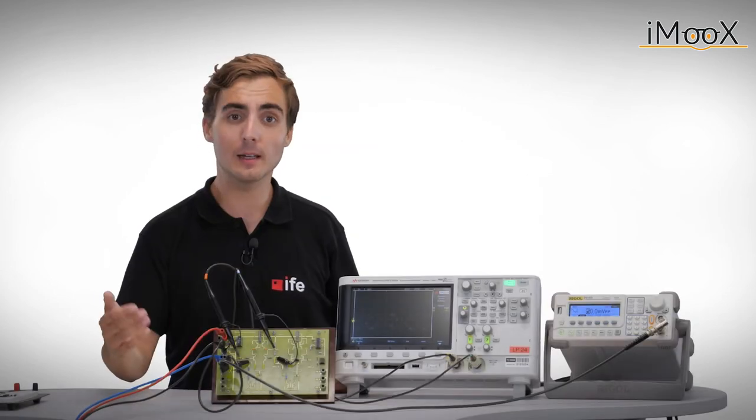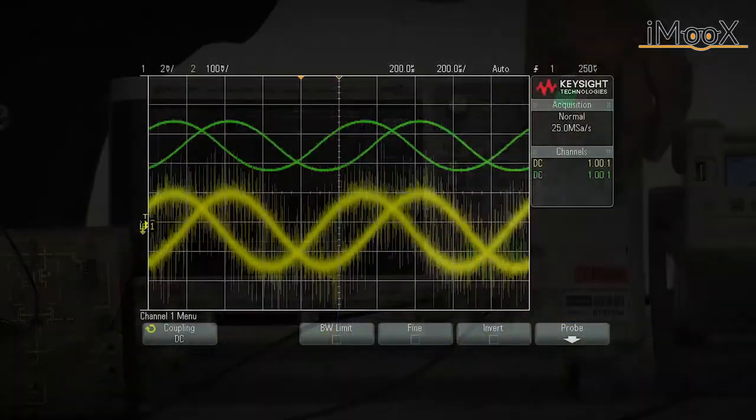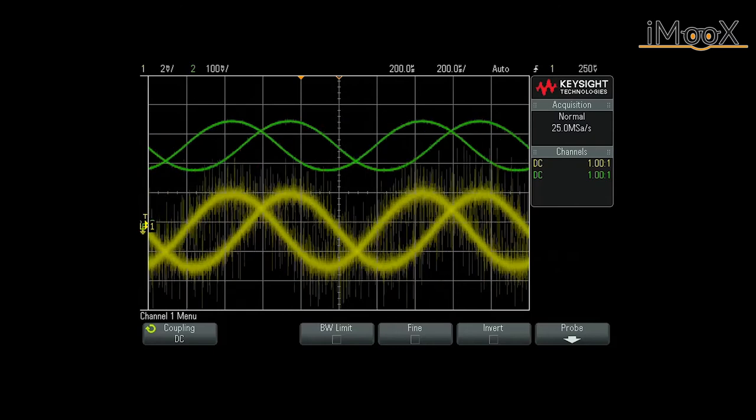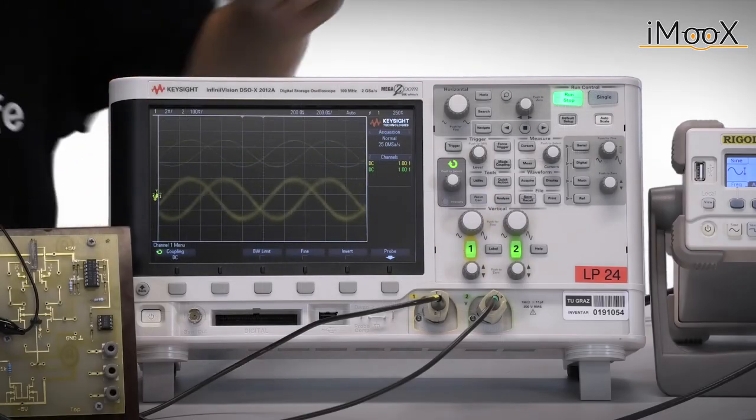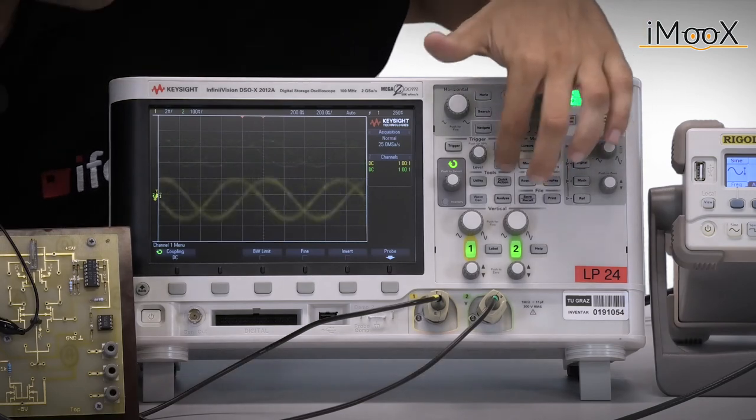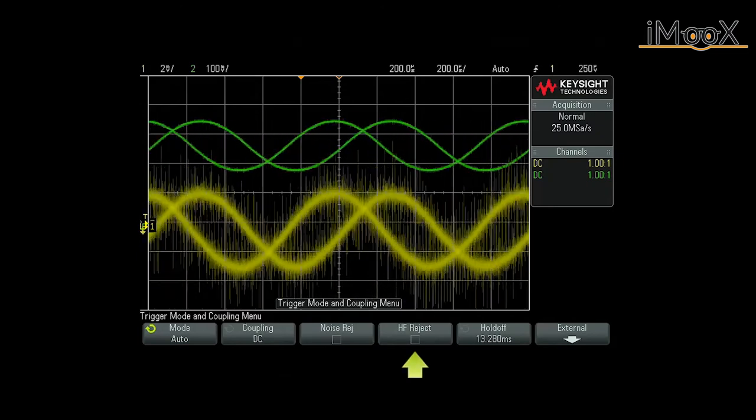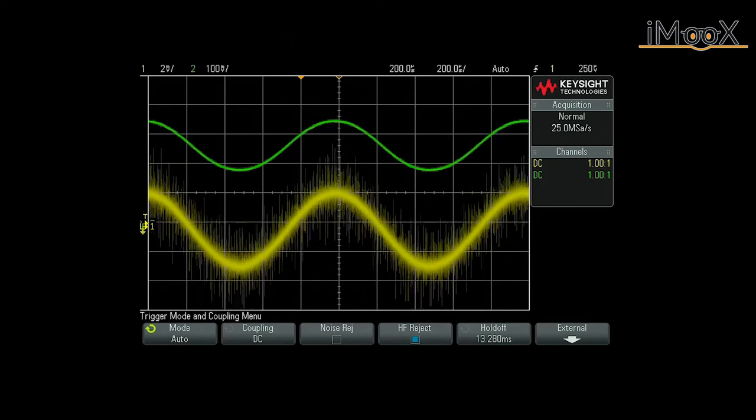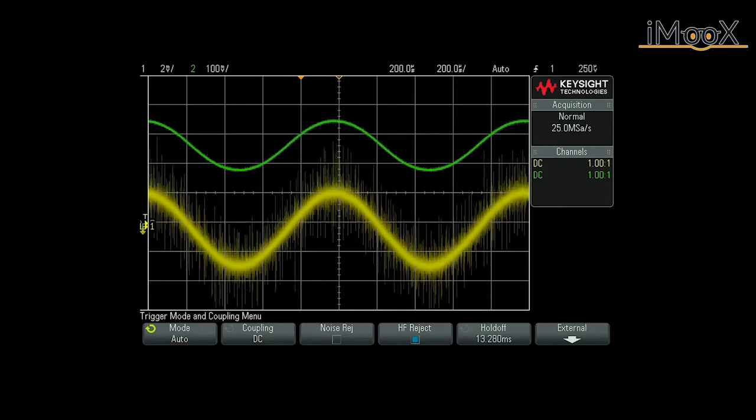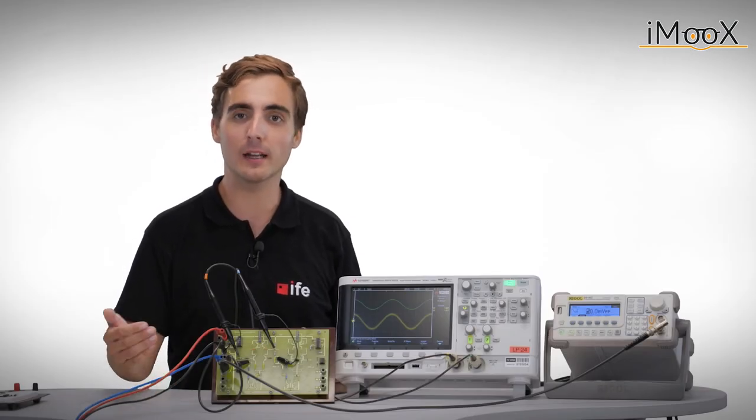We can see some problems with our measurement. The input signal is very noisy and some noise peaks are triggering the signal recording. In order to reduce this effect, we can go to mode coupling and we could select HF reject. In this way, a low-pass filter with a corner frequency of about 50 kHz is added to the trigger path. In this way, the trigger is not influenced by high-frequency noise anymore.